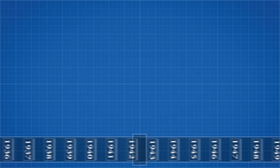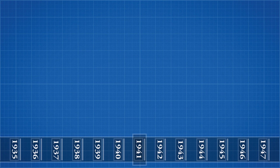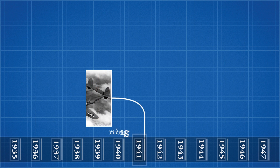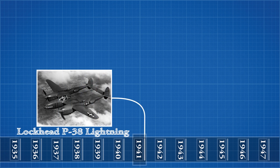Back in 1941 most planes were designed with a straight wing, and the Lockheed P-38 Lightning was no different. The straight wing design works well at lower speeds, but the P-38 was not a slow plane and its engineers quickly discovered that the plane had major control issues in high-speed dives.